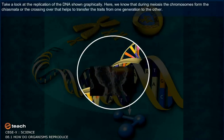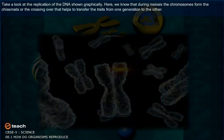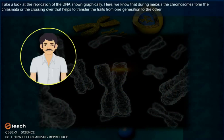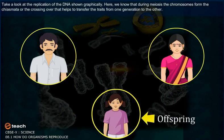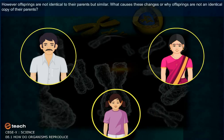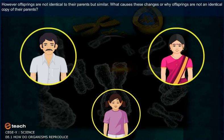Take a look at the replication of the DNA shown graphically. During meiosis, the chromosomes form the chiasma, or crossing over, that helps to transfer traits from one generation to the other. However, the offspring are not identical to their parents but similar.